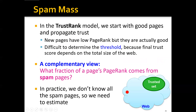In the TrustRank model, we start with good pages and propagate trust. One problem is that new pages usually have relatively low PageRank scores but may actually be good pages. Applying the original TrustRank model directly would mark these new pages as spam, which is not desirable. A second problem is that it's difficult to determine the right threshold because the final trust score depends on the total size of the web.